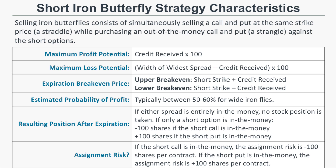The maximum profit potential of the trade is the credit received times 100. So if you sell a short iron butterfly for $10, your maximum profit is $10 times 100, or $1,000 per iron butterfly. The maximum loss potential is the width of the widest spread minus the credit received times 100. The break-even prices are the short strike plus the credit received and the short strike minus the credit received, giving you a wider profitability range.